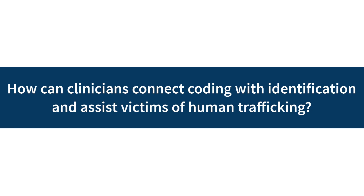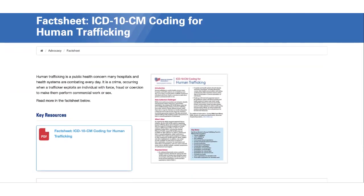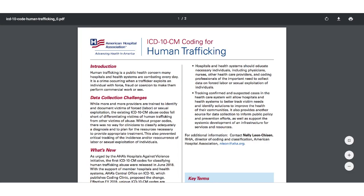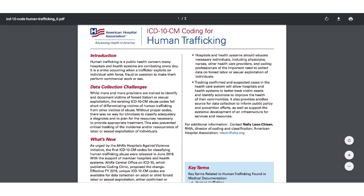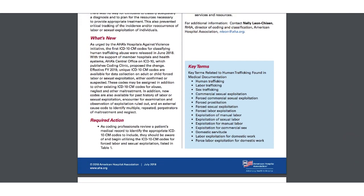Coding professionals and clinical leaders can join together to educate staff that new codes exist, so teams can work together to help victims and also better measure how human trafficking is impacting our communities. The AHA's Hospitals Against Violence website has a number of tools and resources on human trafficking, as well as more information on the new ICD-10-CM codes, including key terms that may be used in medical documentation.